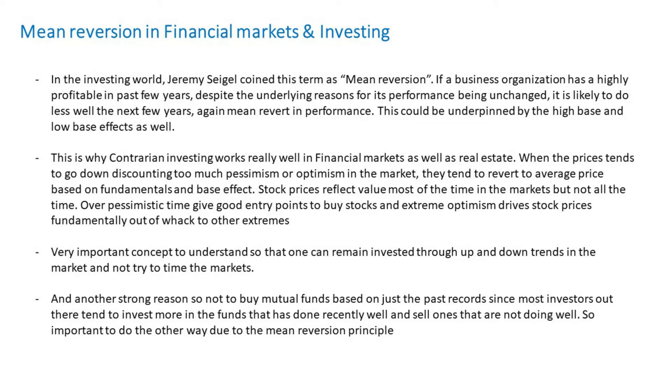Mean reversion in business performance could be underpinned by high base and low base effects. When profitability continuously increases for three, four, or five years, the base becomes very high and maintaining that kind of continuous growth becomes difficult. Demand for the business's products can come down and economic cycles can revert, causing performance degradation in profitability. After years of underperformance or par-for-the-course results, the curve reverts and mean reversion starts taking place. Stock market performance ultimately reflects the underlying earnings performance of the business, and that's precisely why mean reversion happens for most businesses.